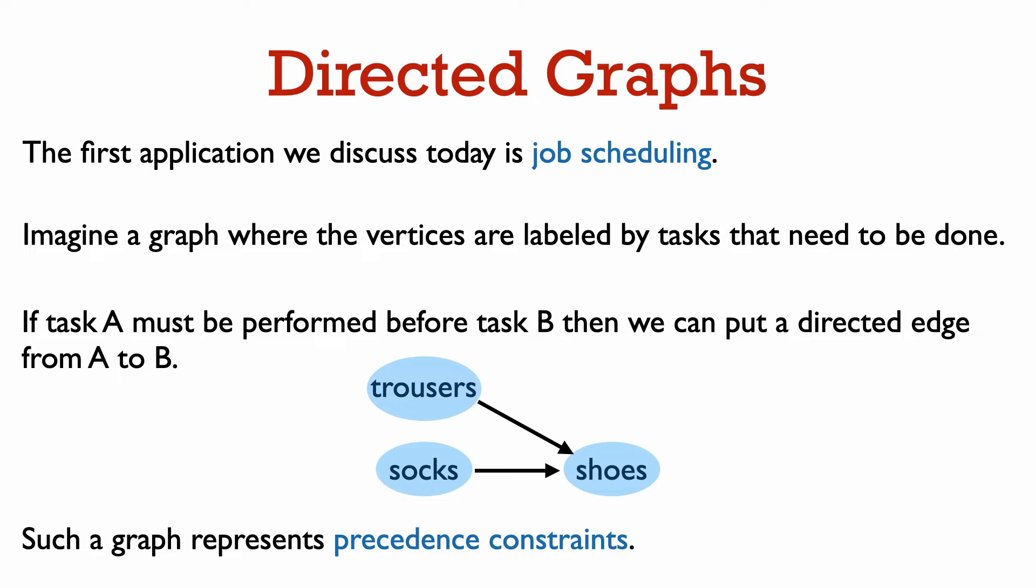If task A has to be done before task B, then we put an edge in the graph directed from task A to task B. For example, in getting dressed, tasks you may have to do include putting on trousers, socks, and shoes.